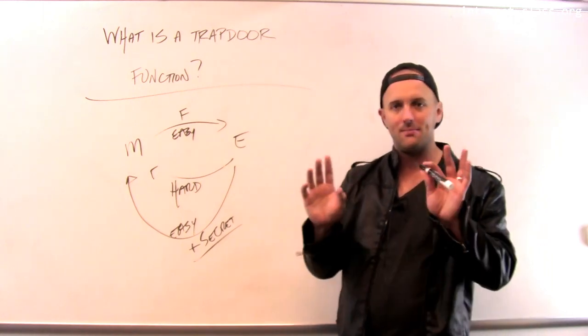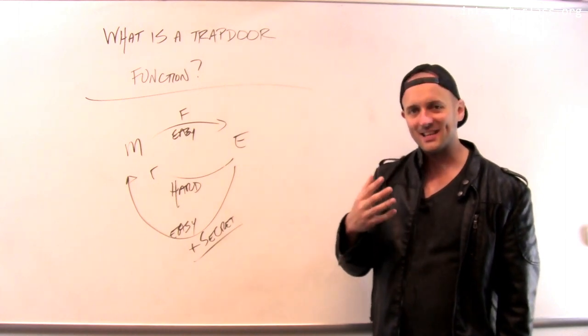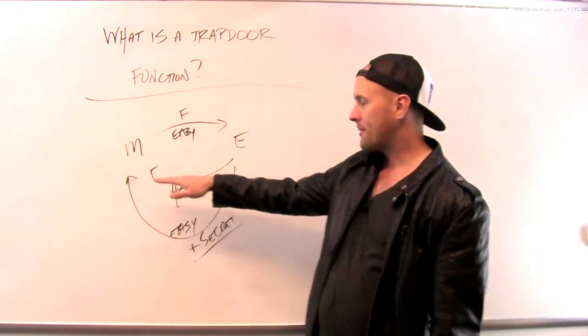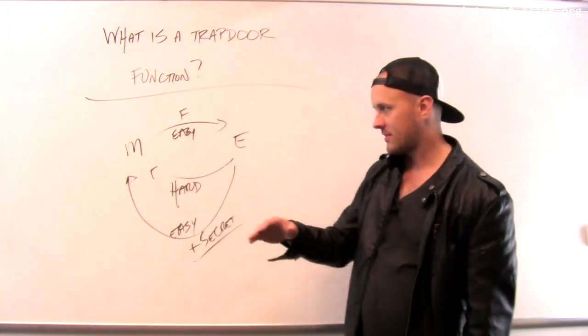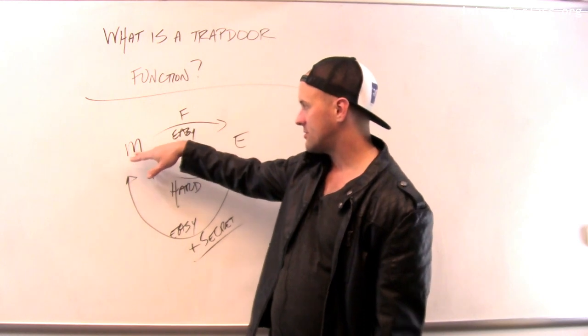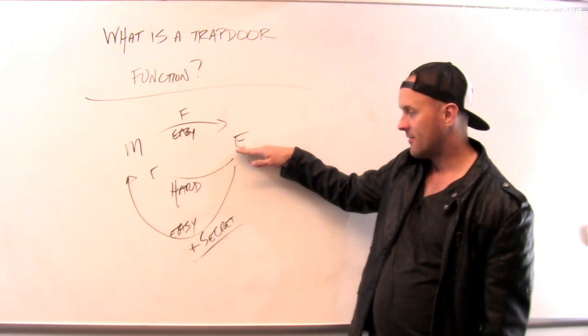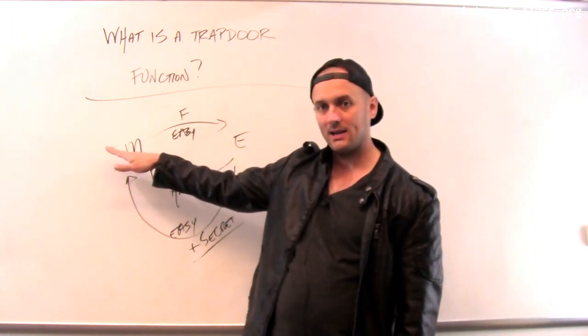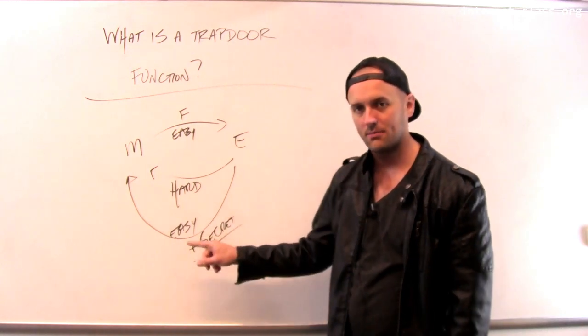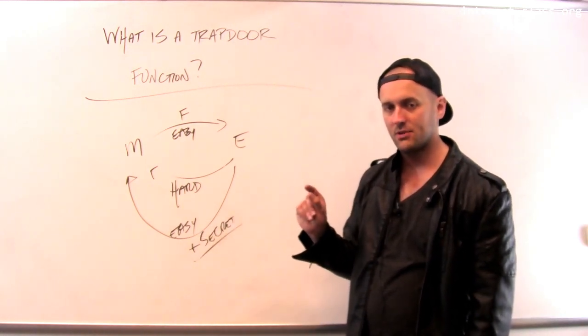So again, review one more time and I'm not doing this to bore you. I'm just doing this to get you to sense a little bit of the magic of this because this is really mind blowing. So there is a category of functions by which if I give you M, it is very easy to apply the function and compute the output. But if I start with the output, it is very hard to get back to M, except if I know this secret piece of information. So that is the definition of a trapdoor function.